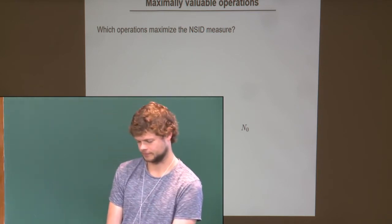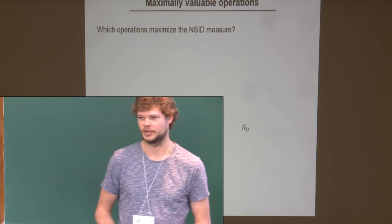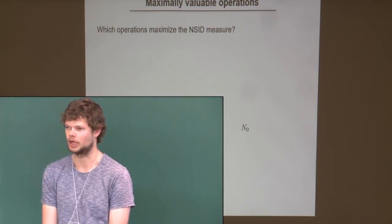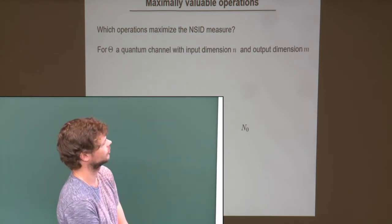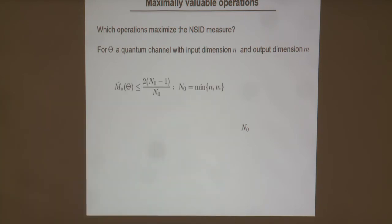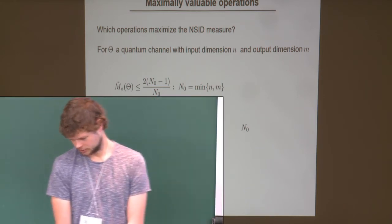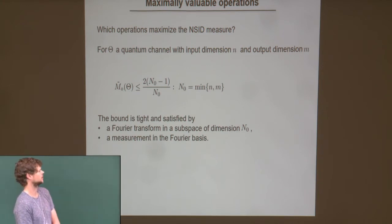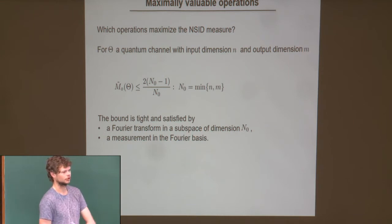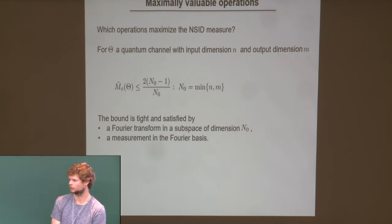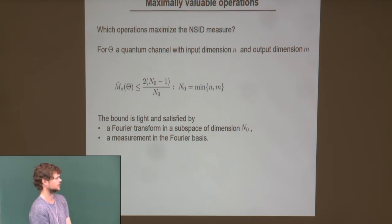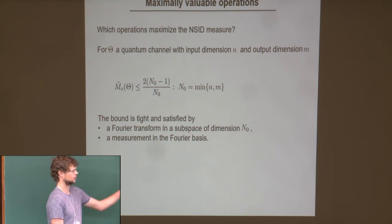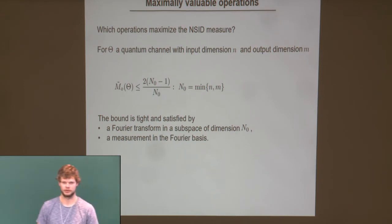Coming back to maximizing the ANSET measure: the first step is finding an upper bound, and then showing the bound can be saturated. For a quantum channel with input and output dimension n, an upper bound to the ANSET measure is given by an expression depending on the minimum of input and output dimension. This bound is tight and is saturated — not surprisingly — by a Fourier transform on a subspace of dimension n_0, since this brings coherences to correlations. Similarly, it is satisfied by a measurement in a Fourier basis, or a Fourier basis of dimension n_0 if input and output dimensions differ.